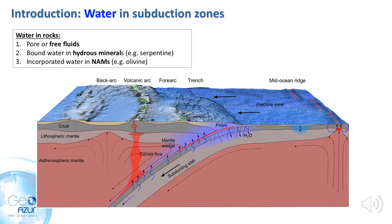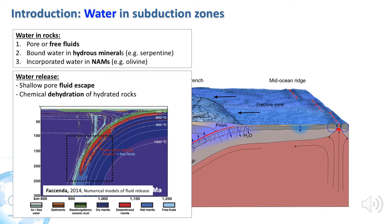Water can be stored in rocks as pore fluids in microscopic cavities within the solid matrix, or as bound water in hydrous minerals like serpentine, or incorporated in the structure of nominally anhydrous minerals like olivine. As the plate subducts, temperature and pressure increase, and most of the stored water is released from the slab, initially through fluid escape and compaction, and later through chemical dehydration.